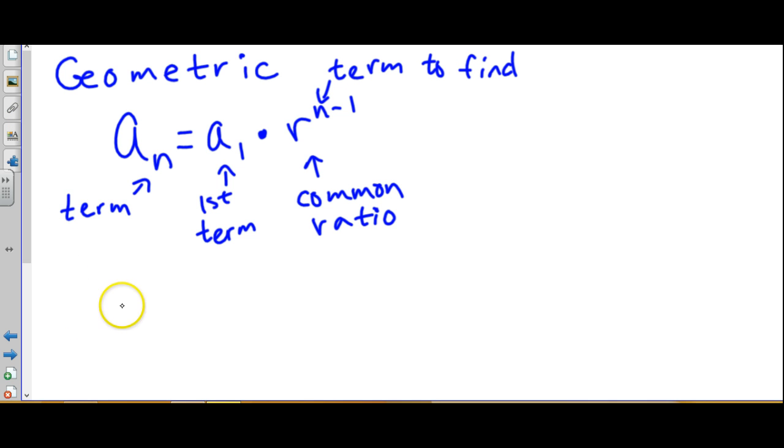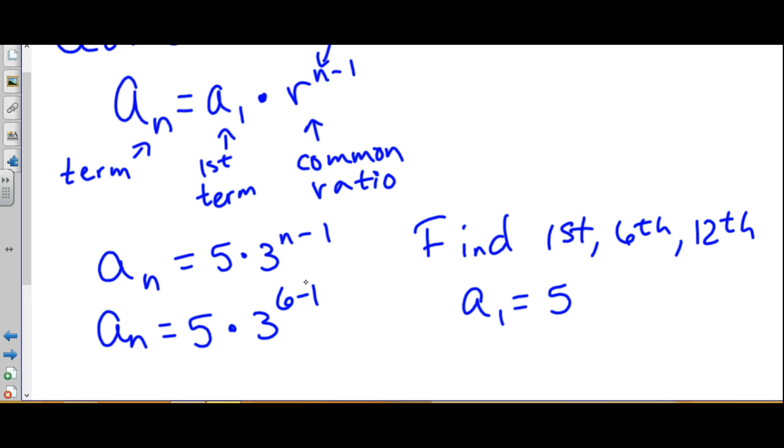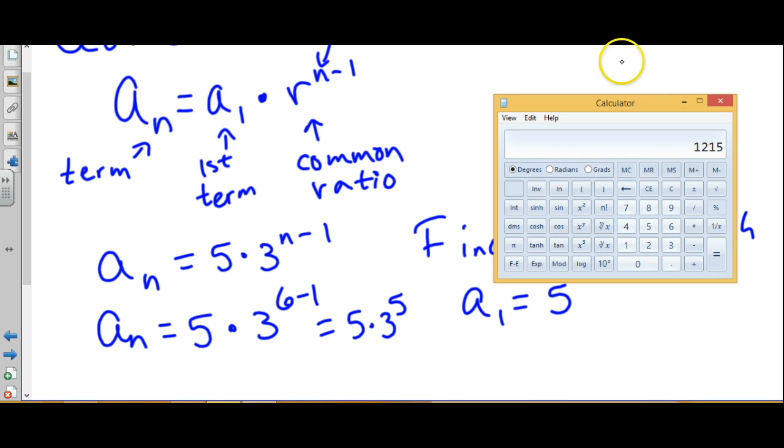So let's say we have a sub n equals 5 times 3 to the n minus 1, and we want to find the first term, the sixth term, and the twelfth term. Well, the first term is easy because it's part of the formula. We know right off the bat 5 is the first term, so we know a sub 1 equals 5. The sixth term, we're going to have to plug it in: 5 times 3 to the 6 minus 1. Now I would make sure to do the subtraction first, and then I would plug it into a calculator. 5 times 3 raised to the fifth equals 1,215. This is the sixth term, so the sixth term is 1,215.